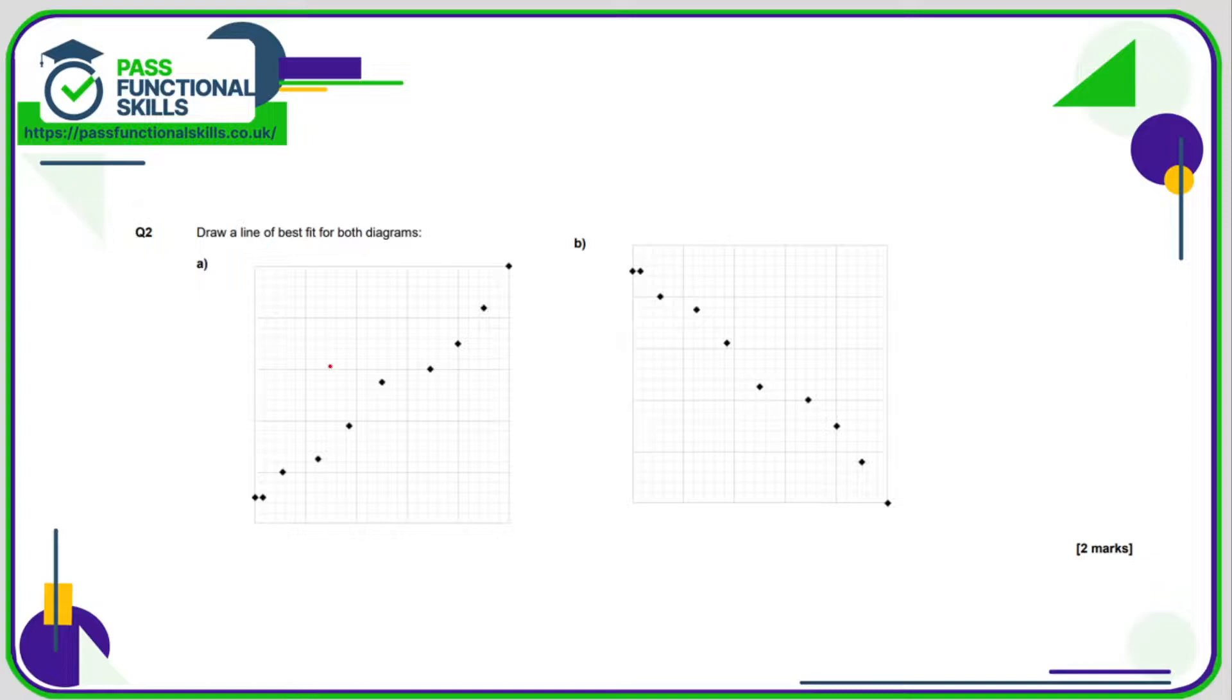Question number two we need to draw in a line of best fit. Now the line of best fit I'm about to draw might not be exactly the same as yours but that might not mean that mine's right and yours is wrong. If I ask 10 people to do the line of best fit it could be that 10 people produce 10 slightly different lines and they might all be fine. Basically all we want to do is draw a line that cuts through the middle of the dots trying to keep as many of the dots as close as possible to the line.